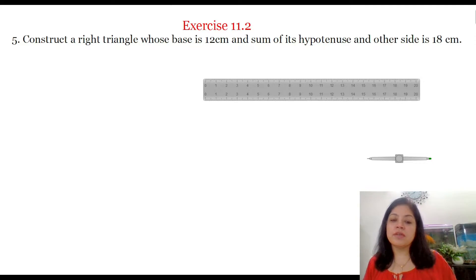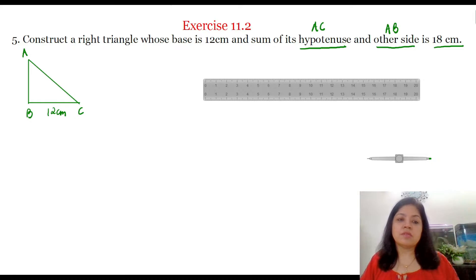Let us first draw a rough figure. So here we have to draw a right triangle. Let this triangle be A, B and C where base BC is equal to 12 cm and sum of its hypotenuse that is AC in the figure and the other side which is AB is equal to 18 cm. That means AB plus AC is equal to 18 cm.